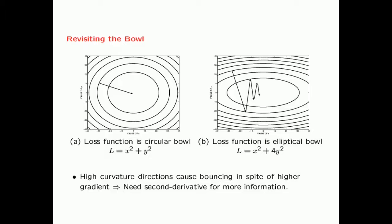To further motivate this, consider two cases: a circular bowl and an elliptical bowl loss function. Both are convex and relatively easy to solve. However, because the sensitivity of the loss function differs along the y-axis versus the x-axis, there is often bouncing in the elliptical bowl case. The two directions have very different curvature, so the steepest descent direction alone does not give the best long-term path. The relative gradient ratios keep changing as you move, requiring many corrective steps.